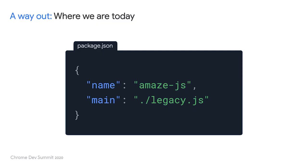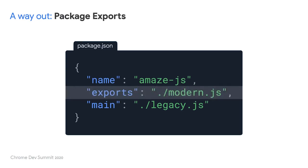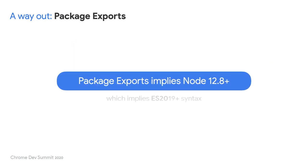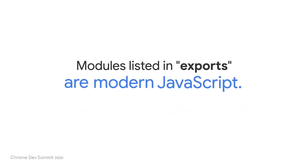Thankfully, this is now a solvable problem. Historically, NPM packages declared a main field pointing to some CommonJS code, which is generally assumed to be ES5. Recently, Node and a number of bundlers have standardized a new field called exports. It does a lot of things, but it has one very important attribute: it's ignored by older versions of Node. This means that modules referenced by the exports field imply a Node version of at least 12.8, and Node 12.8 supports ES2019. That means we have to assume modules referenced by the exports field are modern JavaScript.